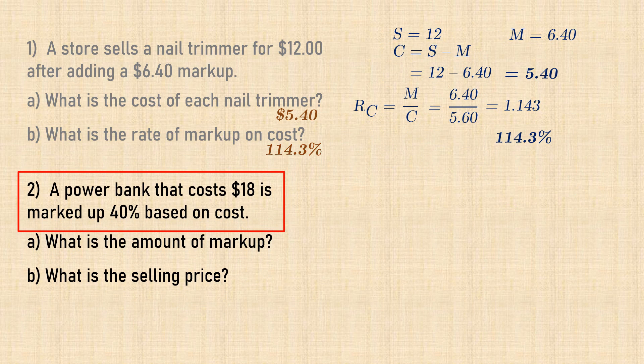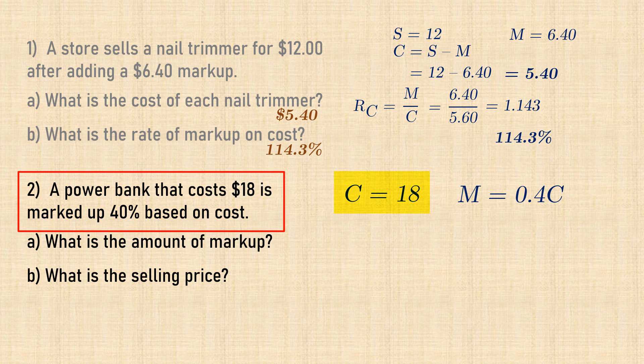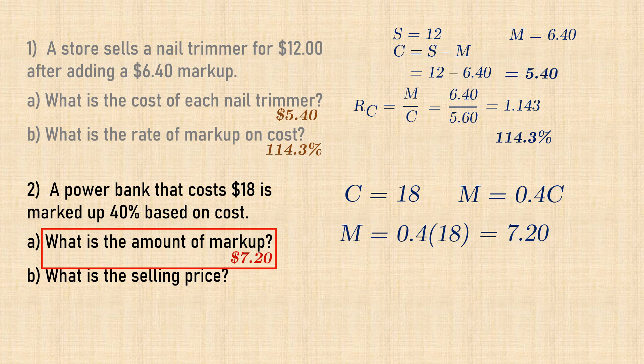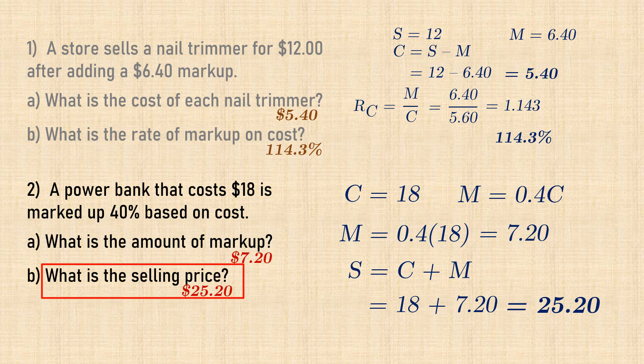In number 2, we have a power bank that costs $18 and is marked up 40% of cost. That is, the rate of markup based on cost is 40% or markup is 0.4 times cost. Since cost is $18, then the amount of markup is 0.4 times 18, which gives $7.20. The Selling Price can thus be found by adding the cost and markup, and that gives $25.20.